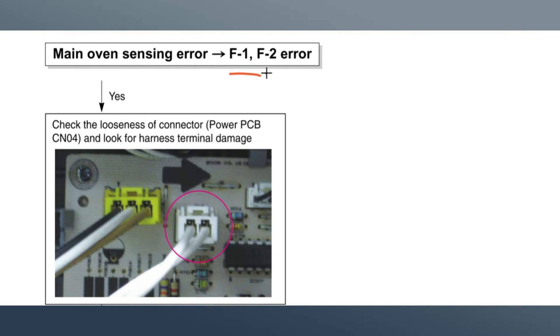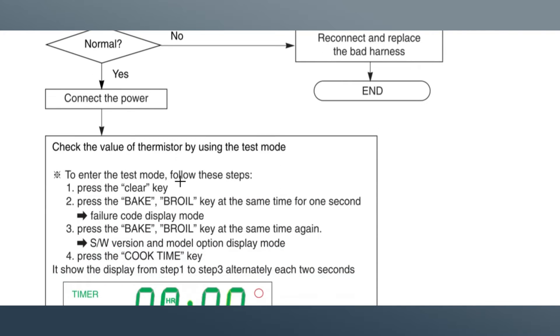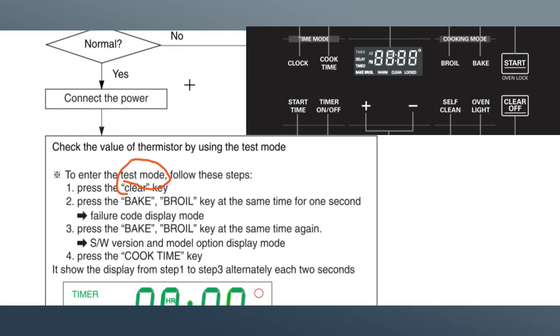So the error code, F1, F2 error code, as it states here, just check to make sure it's connected well, which if we did check this already, we disconnected, we checked it, it reads well with the temperature. We know that the prong temperature sensor is fine. So we're going to put the main control board into the test mode, which is a very good test. Let me erase this because it's going to be in my way and my artwork is horrible.